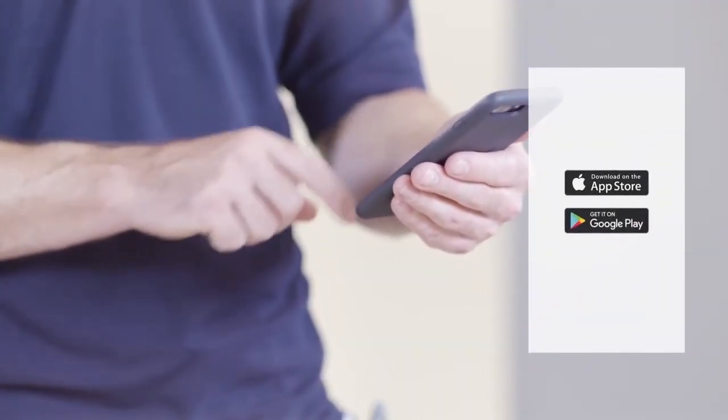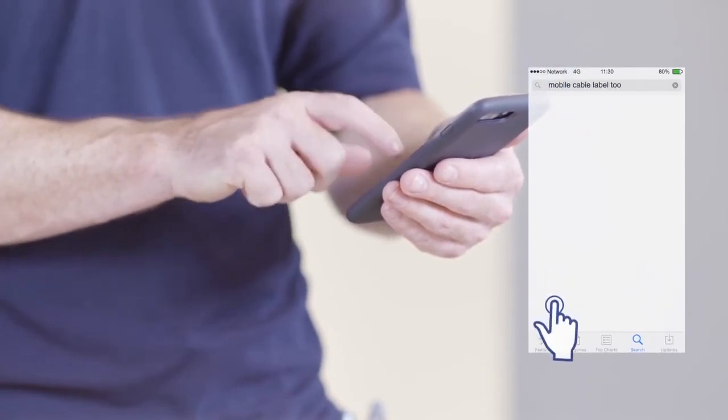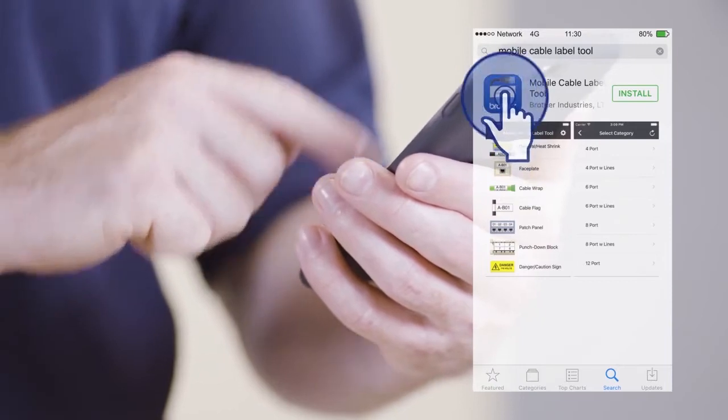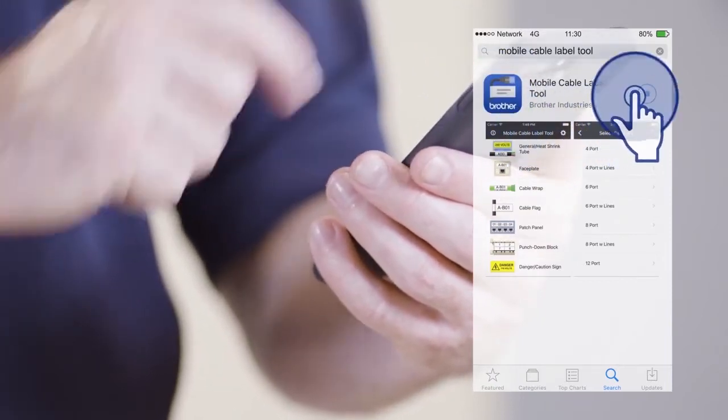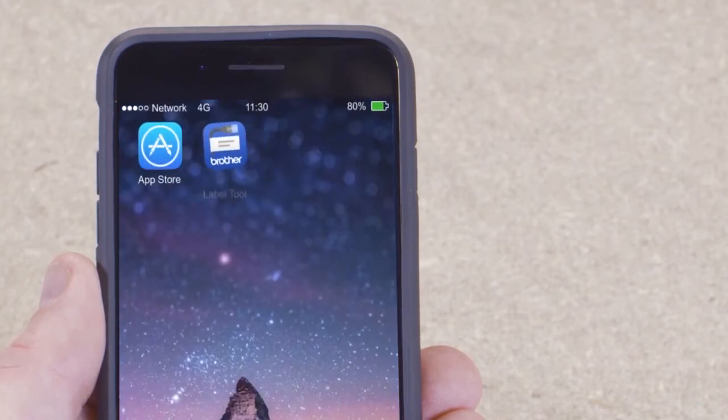The app can be downloaded from the App Store or Google Play. Simply type Mobile Cable Label Tool into the search bar, click on the Brother icon and click Install. Once downloaded, the app will appear amongst your main screen icons and is ready for use.